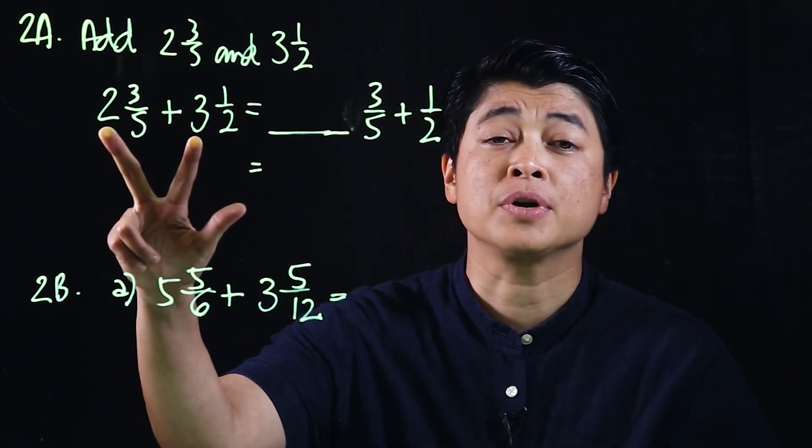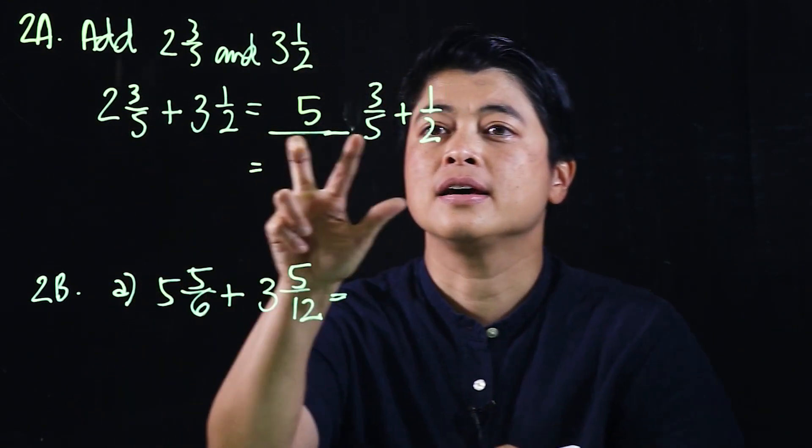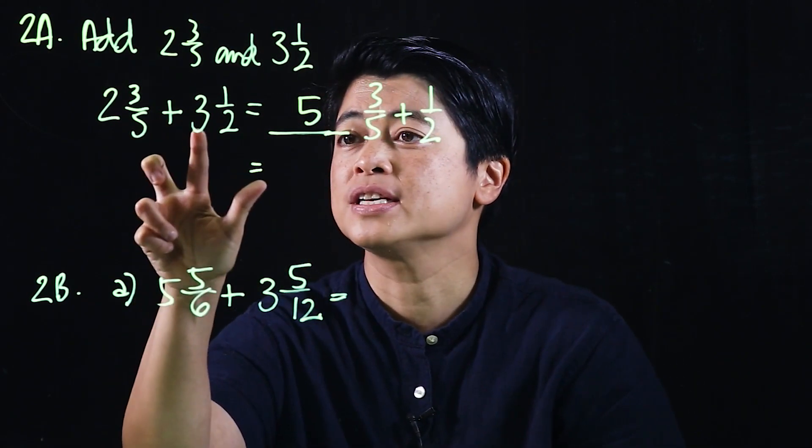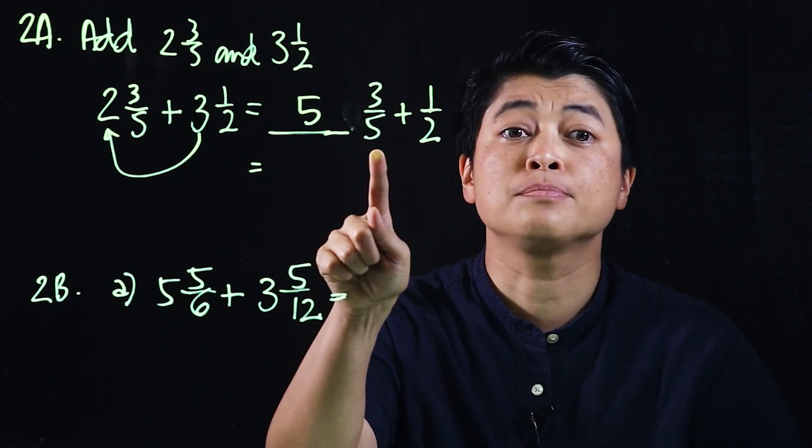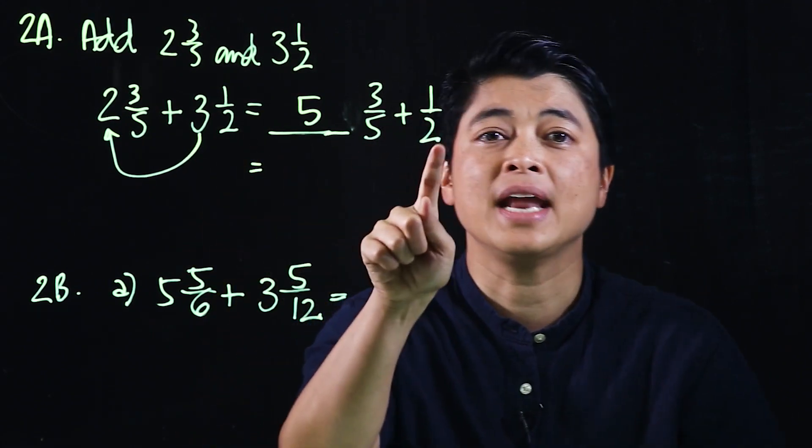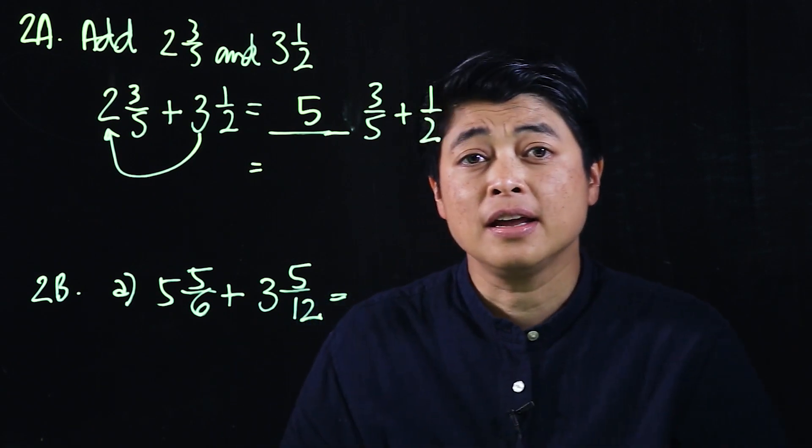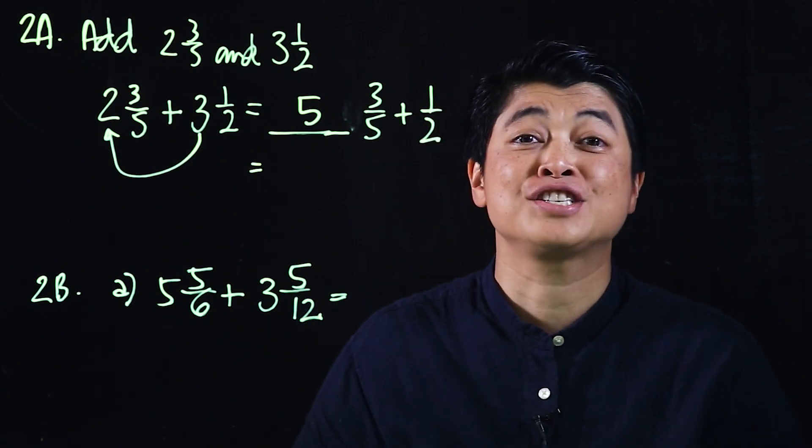The first thing they did was add the whole number: 2 plus 3 is 5, and then the 3/5 goes here, so it's like adding the 3 to the 5 and then the 3/5 belongs to that whole number now, and then plus the 1/2. Again, if you're comfortable teaching that, it's actually a good strategy.